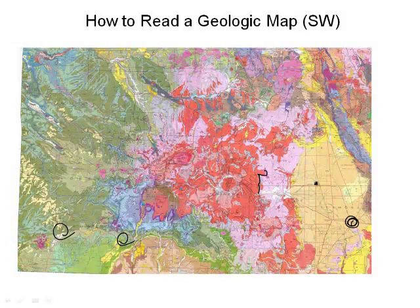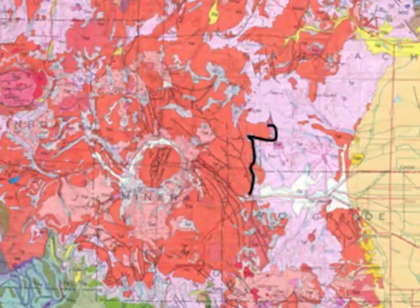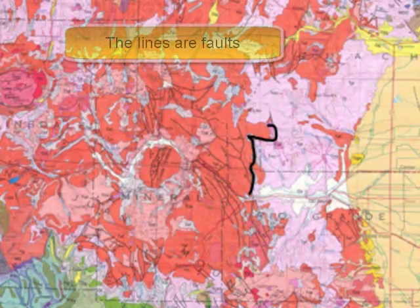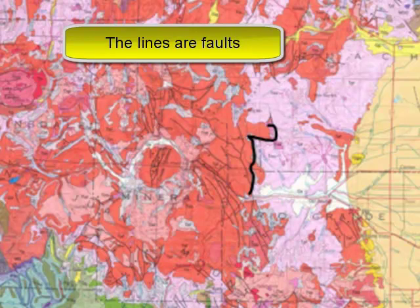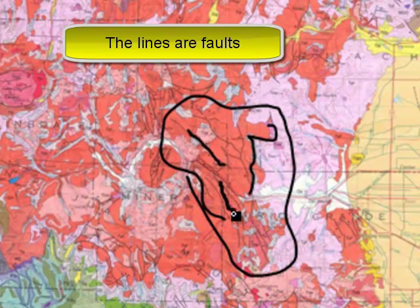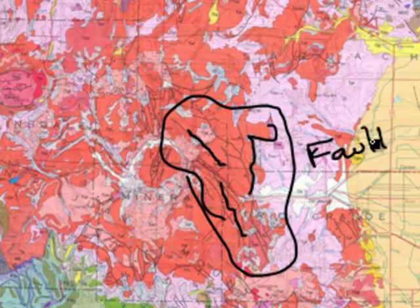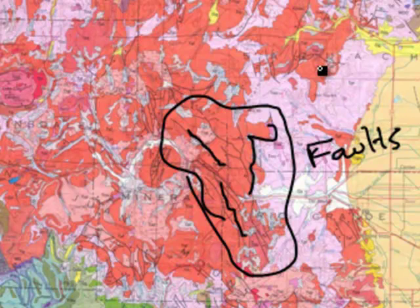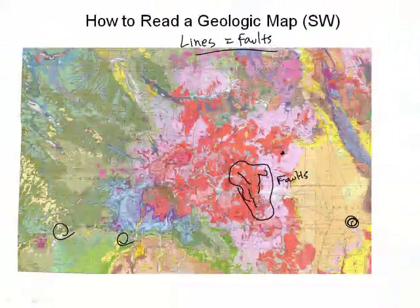A couple other things I want to point out: if you see lines on the map, write this down — the lines are faults. So if you look in this igneous section right here, each of those lines are faults. Geologic maps don't just have colors, but they also have lines, and the lines indicate fault zones.